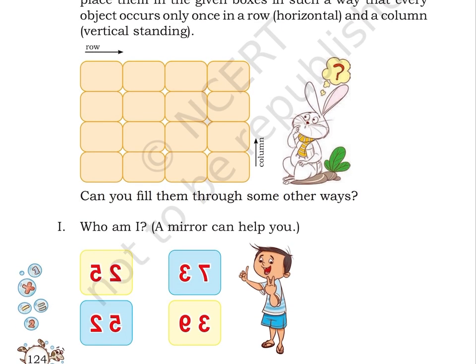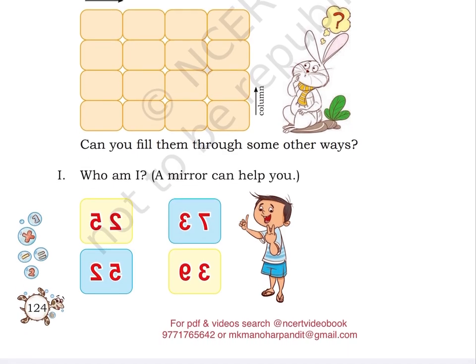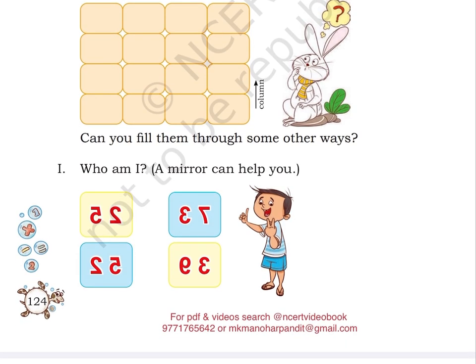Can you fill them through some other ways? Puzzle I: Who am I? A mirror can help you. Here, we have 4 two-digit numbers given to us, which are written inside squares. You have to use a mirror, look at their mirror image and identify what these numbers are.